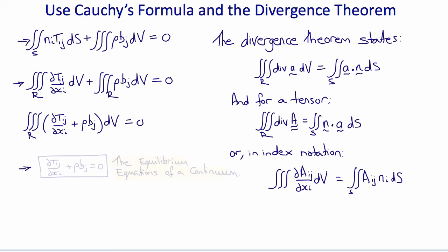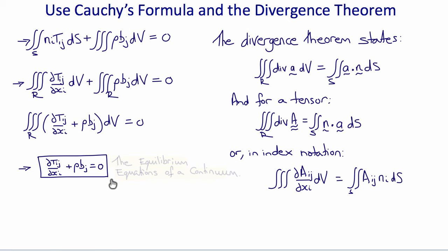At this point we use a common argument in continuum mechanics. Because the region R is completely arbitrary and could be arbitrarily small, the integrand — what's inside the integral — must itself be identically zero. Therefore we can ignore the integral and state that the differential equation inside is zero: del T_ij / del X_i plus rho B_j equals zero, or the divergence of the stress plus rho times the body force equals zero. These are the equilibrium equations of a continuum.